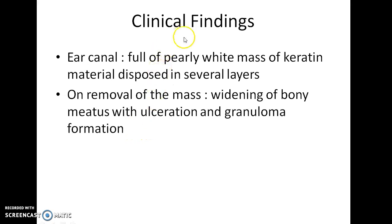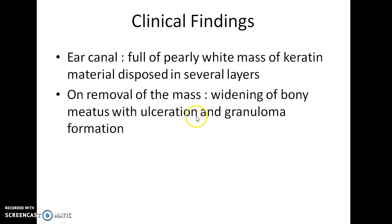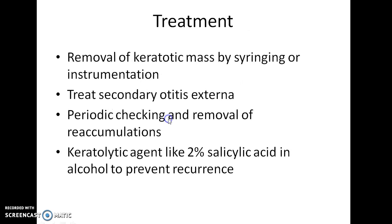The clinical findings: the ear canal will be full of a pearly white mass of keratin material disposed in several layers. On removal of the mass, we can find widening of the bony meatus with ulceration and granuloma formation.